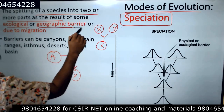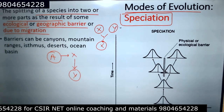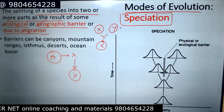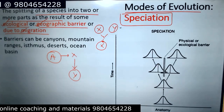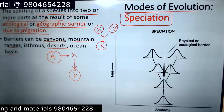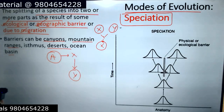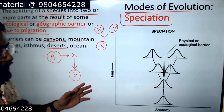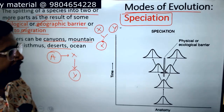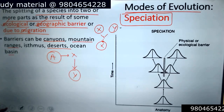The splitting of a species into two or more parts as the result of some ecological or geographical barrier, or due to migration, is termed speciation. Barriers can be different things like canyons, mountain ranges, deserts, oceans, and many more. Physical and environmental barriers can separate organisms from each other, and as the physical barrier separates them, there will be reproductive isolation.